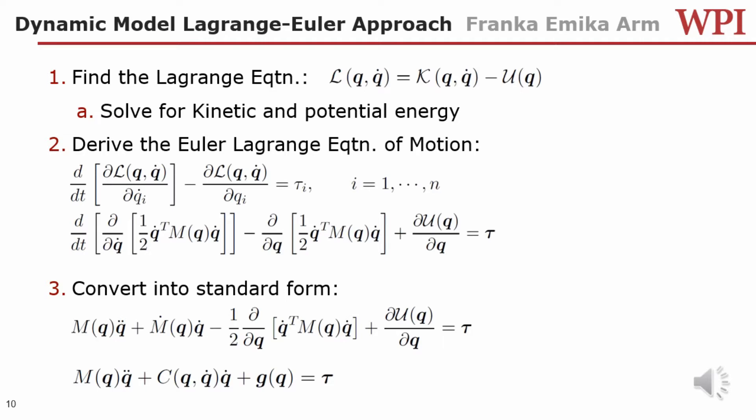For the analytical dynamic model, we use the Lagrange-Euler approach, which depends on the use of the Lagrange equation, which is kinetic energy minus potential energy. From this, we are able to derive the Euler-Lagrange equation of motion through a time derivative and a partial derivative with respect to angular velocity and a partial derivative with respect to the theta angle. Through a series of algorithms, we are able to convert this to the standard matrix vector form, which consists of the inertia, Coriolis, and gravity matrices, which will give us the torques for each angle.